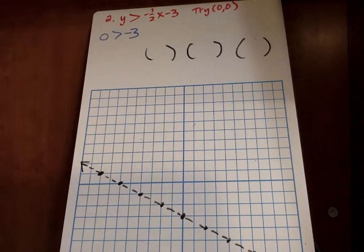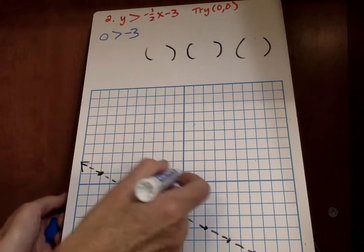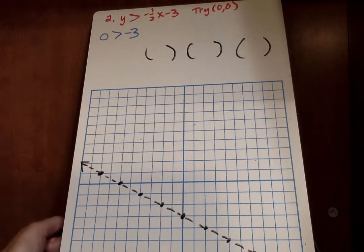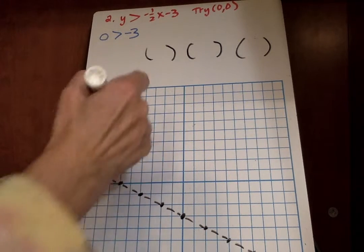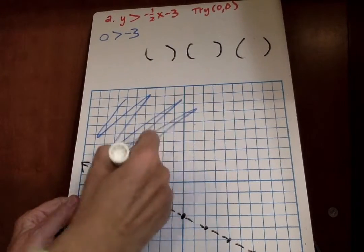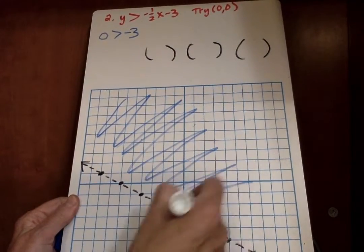So is 0 greater than negative 3? Here's 0. Here's negative 3. It's to the right on the number line. So that is true. So that means everything should be shaded above the line.